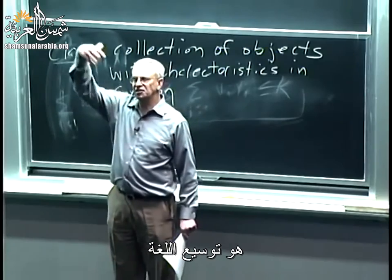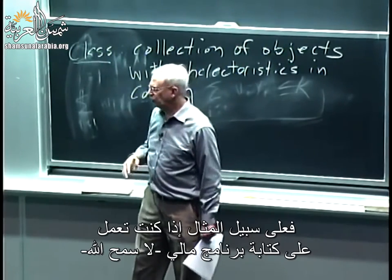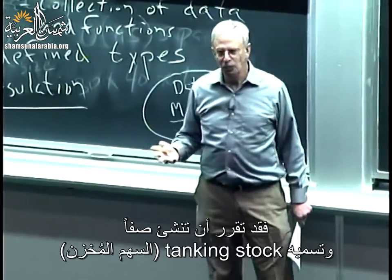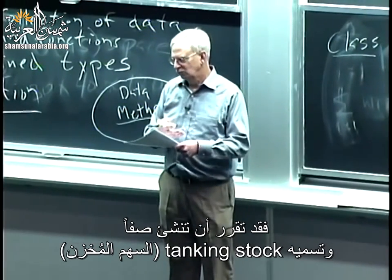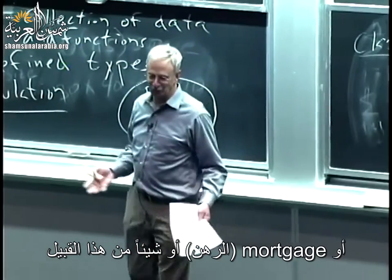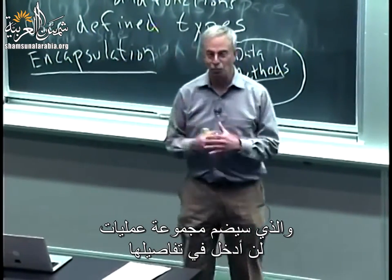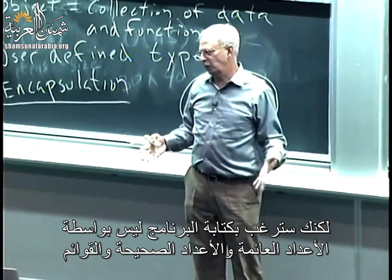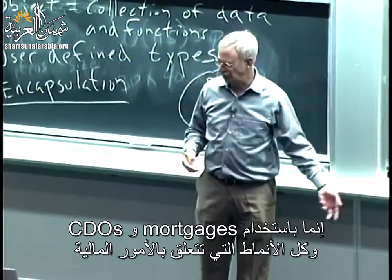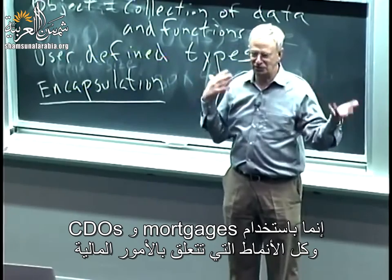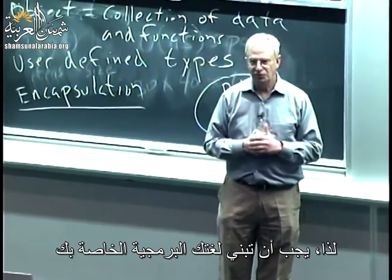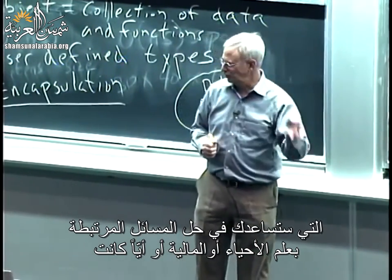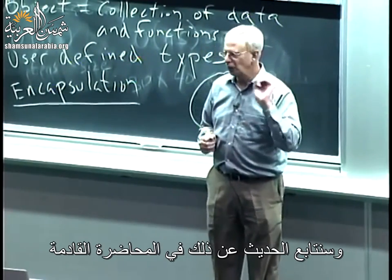So if, for example, you're in the business of writing financial software today, you might decide you'd like to have a class called 'mortgage' or 'tanking stock' — which would have a bunch of operations on it. You'd like to write your program not in terms of floats, ints, and lists, but in terms of mortgages, CDOs, and all of the objects you read about in the paper. So you get to build your own special-purpose programming language that helps you solve your problems in biology, finance, or whatever. And we'll pick up here again on Tuesday.